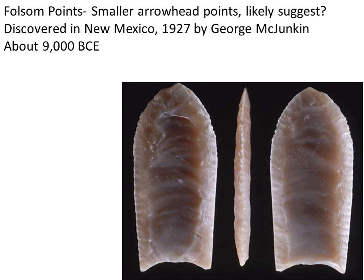These are Folsom points — small arrowheads discovered by George McJunkin in the 1920s in places like New Mexico. These date to around about 9,000 BCE and provide evidence of a change in environment and lifestyle for Native Americans, moving from hunting large game like mammoths — perhaps over-hunting them — to hunting smaller game. We can learn a lot about Native Americans from archaeology: their basic origins and the way in which they lived.